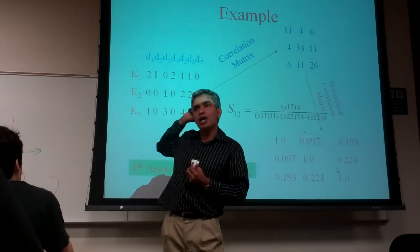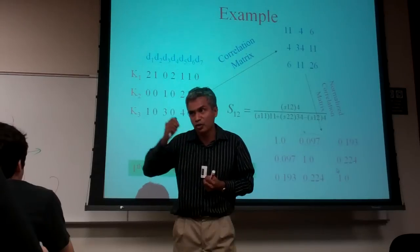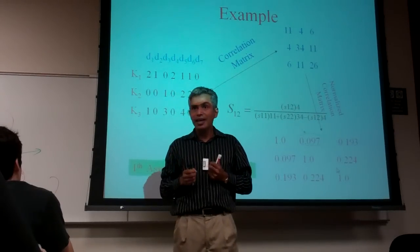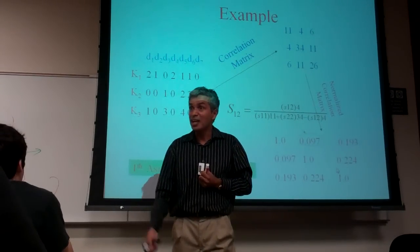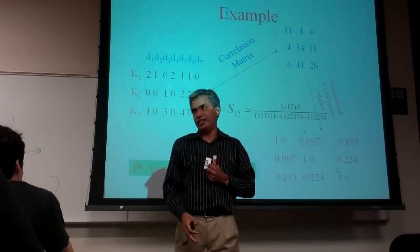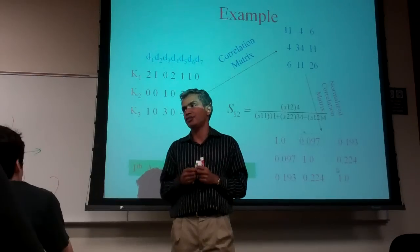So I have a word which is present in .00001% of the documents. Another word which is also present in .0001% of the documents. But they are perfectly correlated. That means every document where this occurs, this also occurs.